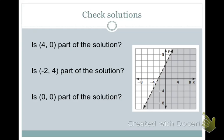Let's see if we can identify if points on a graph are part of the solution to this inequality. Is the point (4, 0) part of the solution? I'm going to plot the point (4, 0) on my graph, and as you can see, it falls in the shaded area. Remember, the shaded area represents the solution set. So yes, (4, 0) is part of my solution.